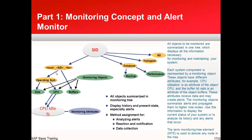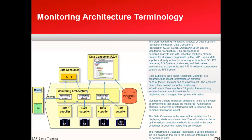Examples of MTEs are operating system and databases. Now let's get into the architecture. At the center of the monitoring architecture you have the monitoring objects. Different data suppliers feed into these — DB supplying its data, OS supplying its data, and R3 supplying its data. The consumer API is RZ20, which collects all that data. These data suppliers can be called collection methods. The performance database represents a series of tables in the R3 database that store the collected information and performance data.